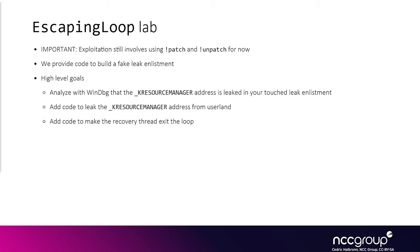The lab's name is 'Escaping Loop.' The idea is to focus on analyzing what kind of addresses are written to our fake userland structures that we control, and consequently what kind of addresses we can leak from userland. We will use the bang patch command to assist us in winning the race condition so we can focus on the information leak part. We provide code to build a fake leak enlistment, and it will allow us to focus on stepping in the debugger to understand what part of the code actually writes kernel addresses to our fake userland enlistment. Then we'll modify the exploit code to leak useful information from userland.